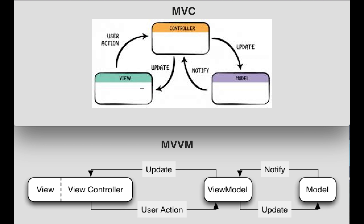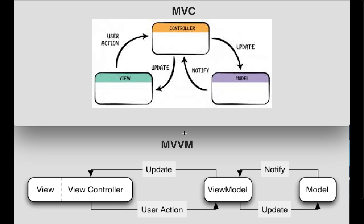So this is how the MVC pattern works. The view and the model are performing actions — taking inputs and producing output — but not in a direct way. They interact with each other indirectly, by using the controller.